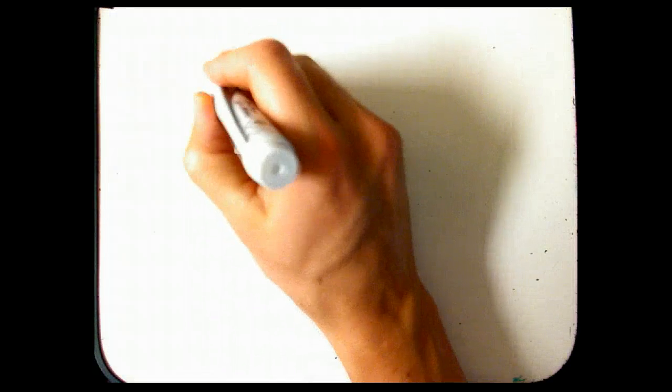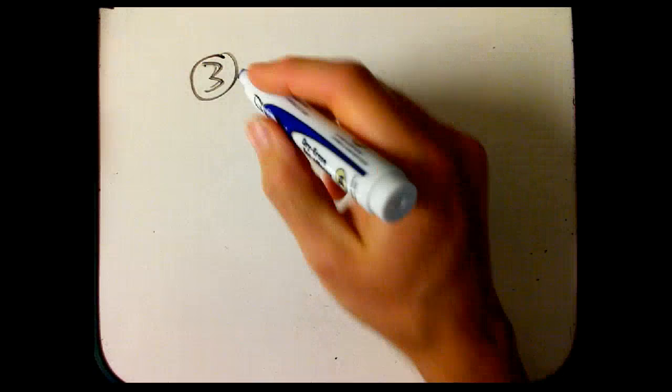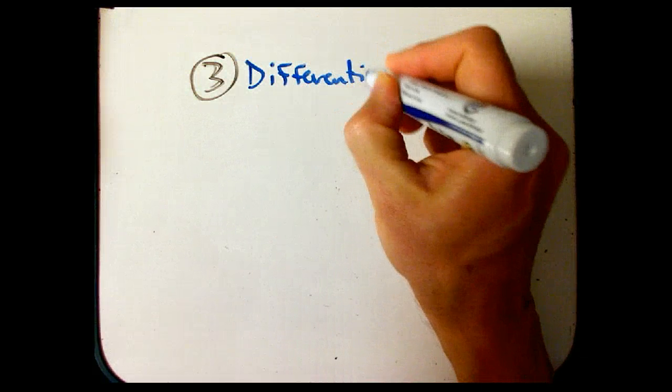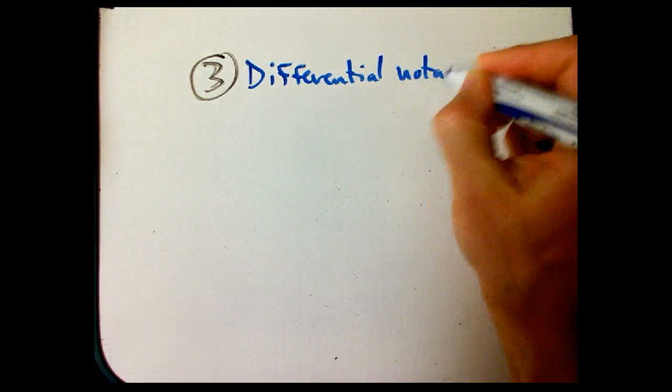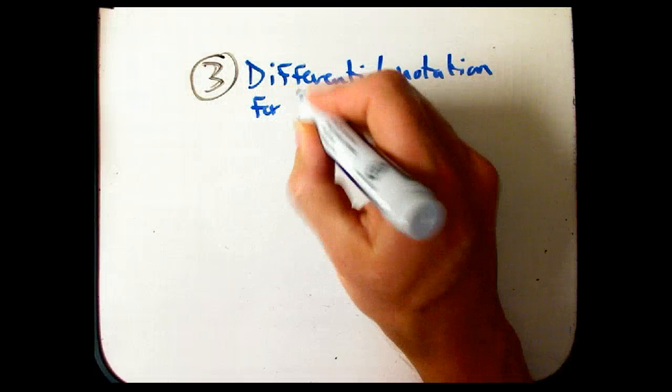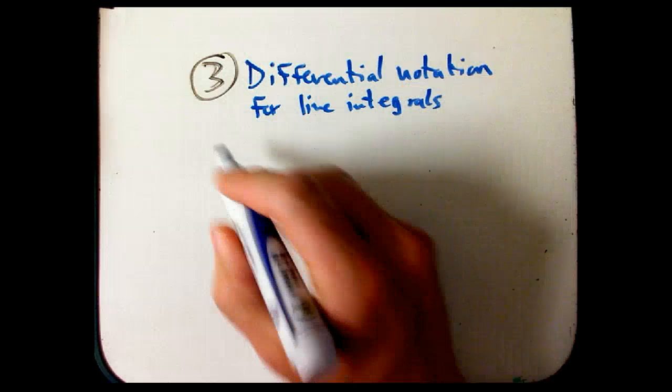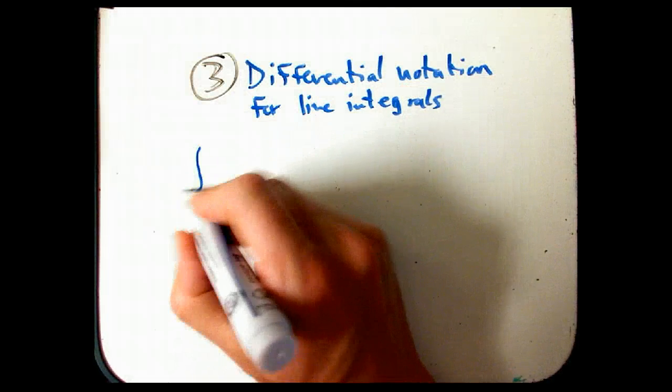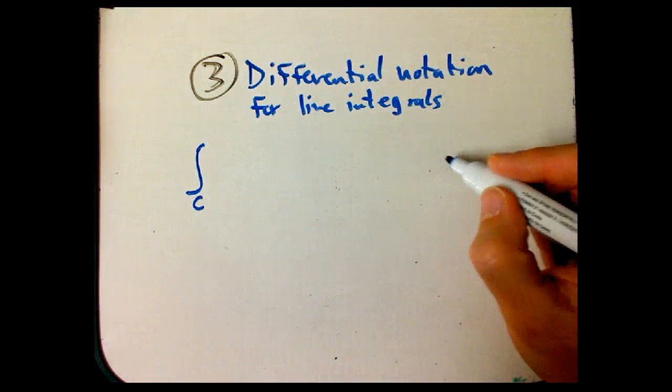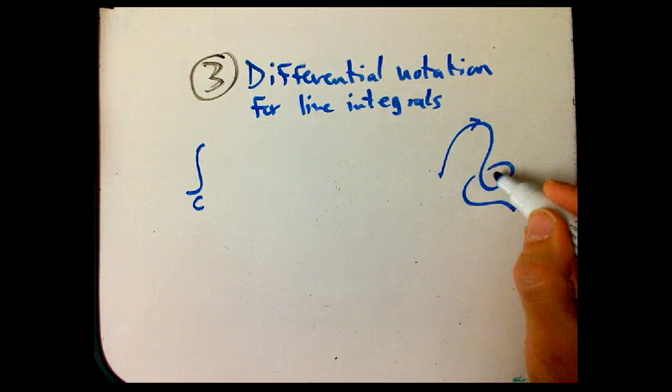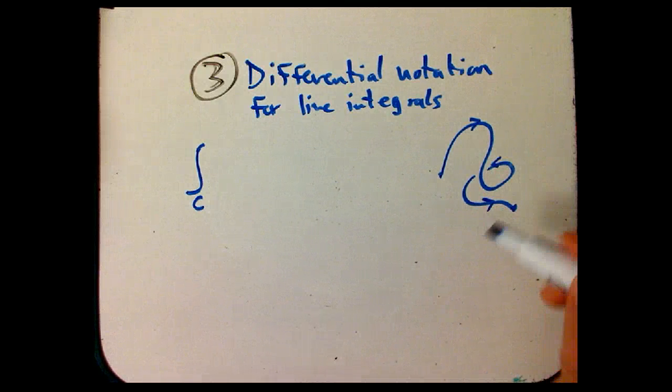So that was the second hint. The third hint that we've seen is going to have a curve C, like this, oriented of course, and that's going to be very important. Orientation is going to be very important throughout this.